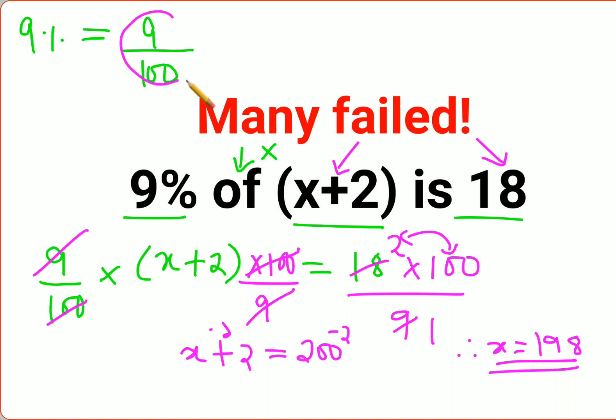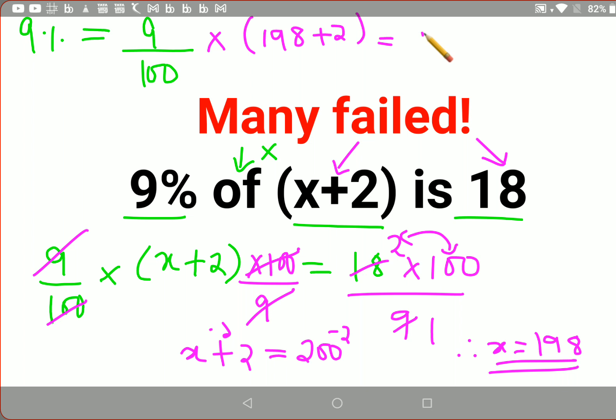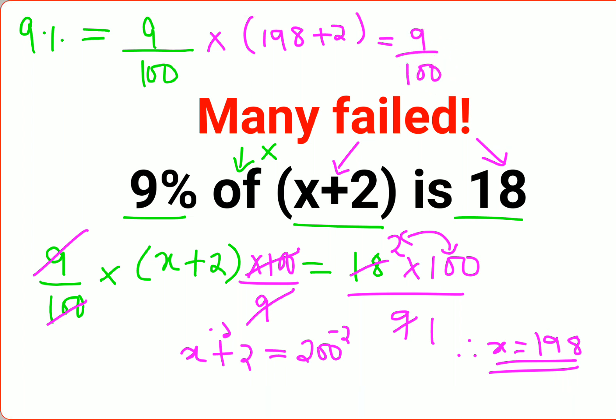So 9%, that is 9 upon 100, into, of means multiplication, x plus 2. So x is what? 198 plus 2. So this becomes 9 upon 100 into 200. So the zeros are cancelling and then you are just getting 9 into 2 which gets you 18.